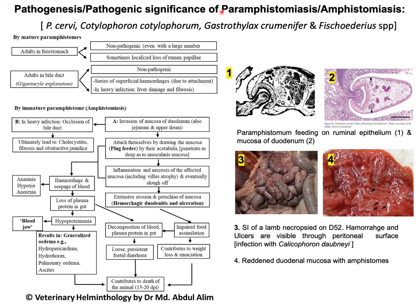Pathogenesis or pathogenic significance of Paramphystomosis or Amphistomosis: This disease is caused by different species including Paramphystomum, Cotylophoron cotylophoron, Gastrothylax, and Fiscoidarius species. Pathogenesis is caused by both adult and immature parasites. Adult parasites located in the forestomach — particularly rumen and reticulum — are generally non-pathogenic, even with a large number of parasites at the predilection site. Sometimes they may cause localized loss of rumen papillae in case of heavy infection. In the case of Zygantocotyle explanatum in the bile duct and gallbladder, they are also considered non-pathogenic, but sometimes there may be superficial hemorrhage due to attachment with the mucosa.